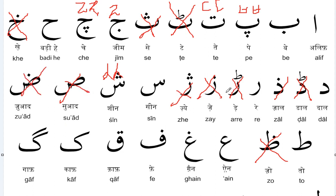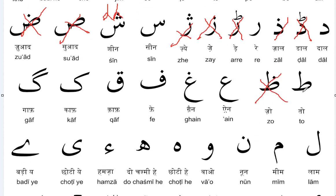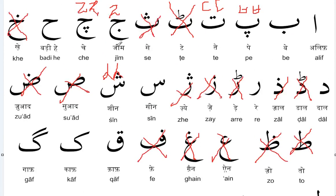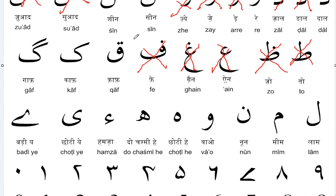Swad has a similar sound to Join and Day. Zoad doesn't exist at all. Point also resembles Day, as already explained. Gain doesn't exist at all — I think it's rare even in other languages. Fa doesn't exist in Korean either; instead they convert Fa into P — for example, 'factory' is said as 'pactory' and 'coffee' as 'copee'.